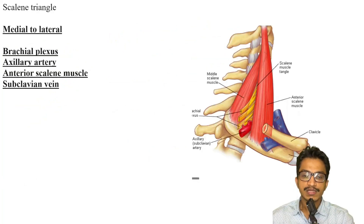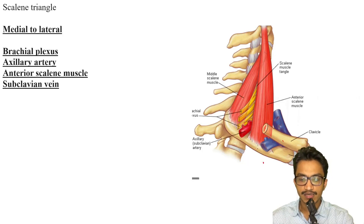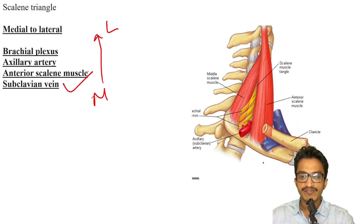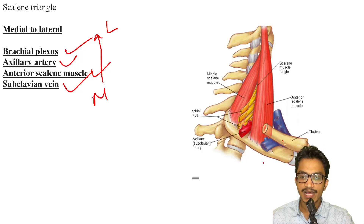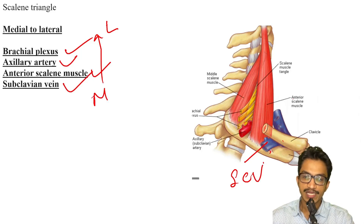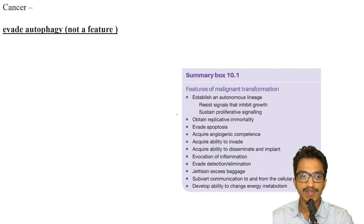In the scalene triangle going from medial to lateral: the first structure is the subclavian vein, followed by the anterior scalene muscle, followed by the subclavian artery and brachial plexus. Towards the sternum and medial part of the first rib, the first structure is the subclavian vein.